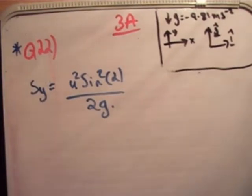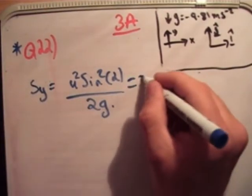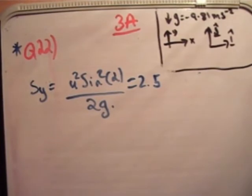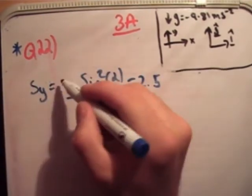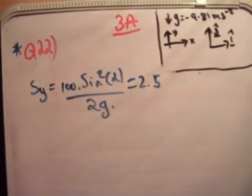So in this we're given that the maximum height is 2.5 meters. And we're given that the initial speed is 10, which means that this here is 100, because it's 10 squared. And we're asked to find the sine of the angle of projection.